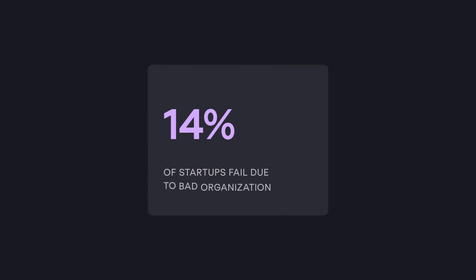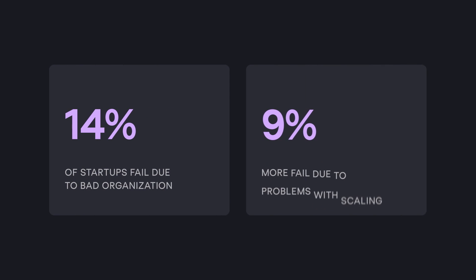When I say ruined, I'm not being metaphoric. Studies show that 14% of startups fail due to bad organization and 9% more fail due to problems with scaling. A design system becomes the steel grid that supports the product from collapse.